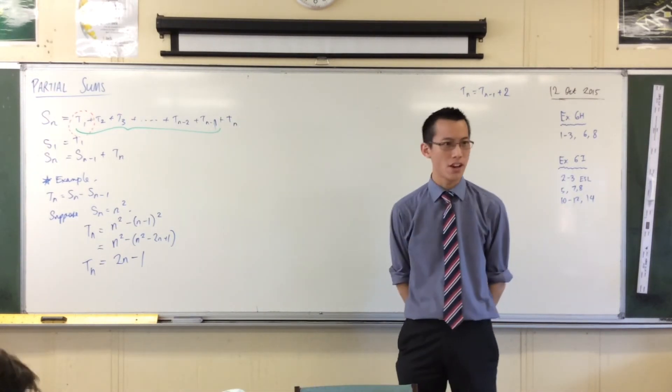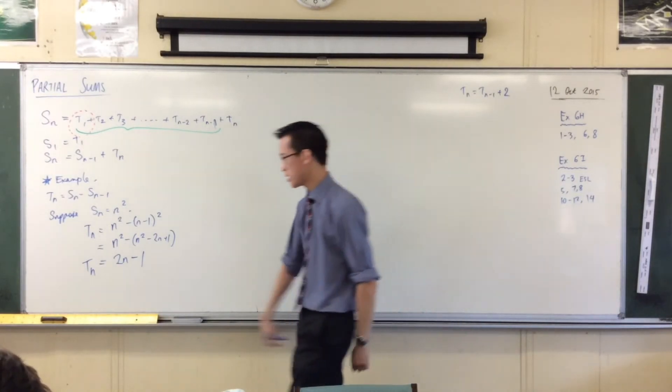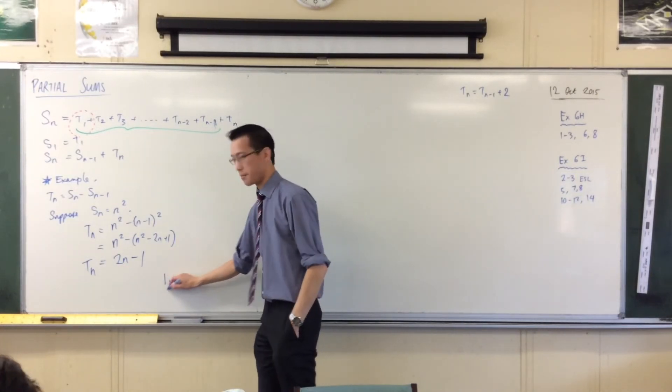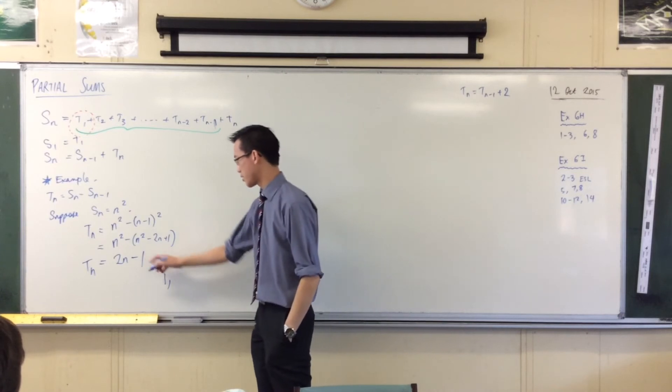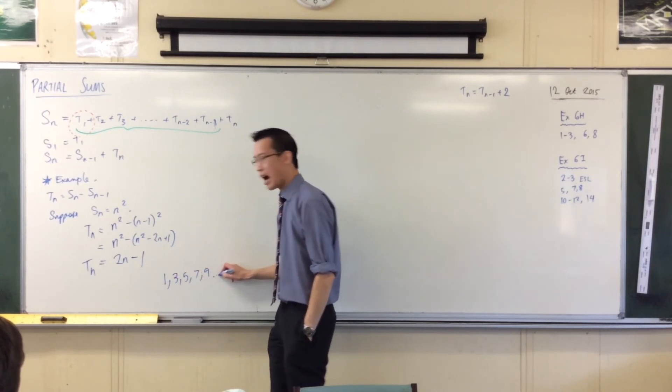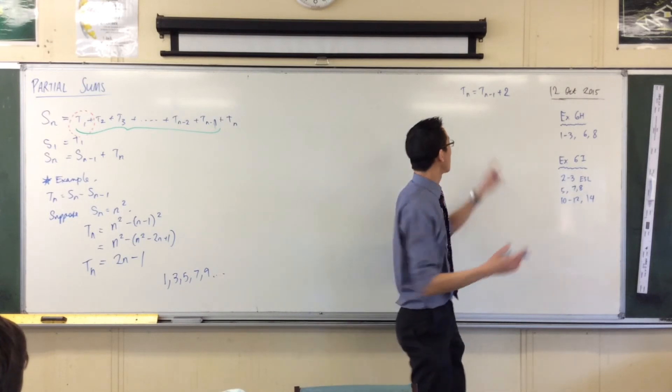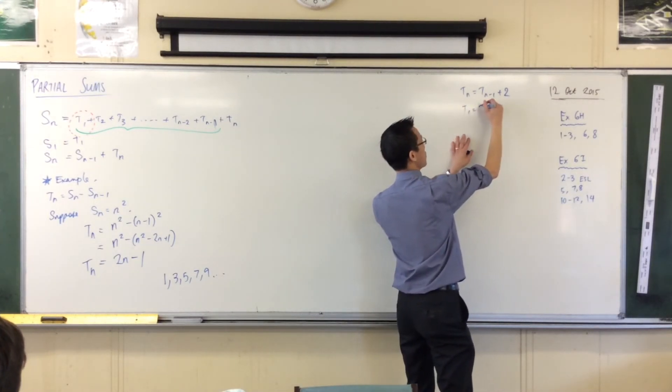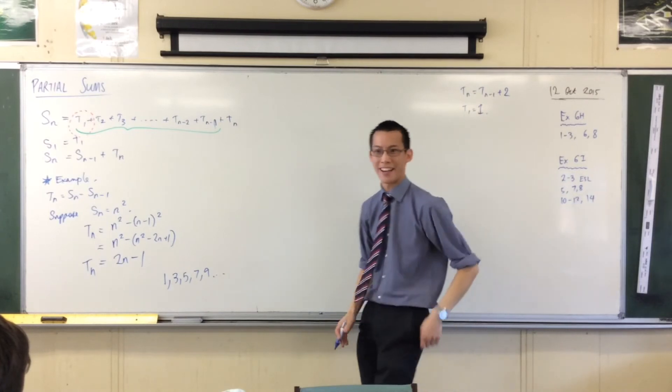What sequence of numbers is this? What is the first term? n equals 1 will give me 2 minus 1, it'll give me 1. What's n equals 2? It's 3, and then 5, and then 7. So, I have the odd numbers here. I have this sequence. 1. There you go. Total save.